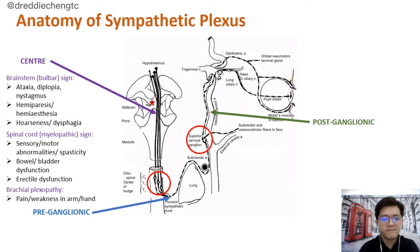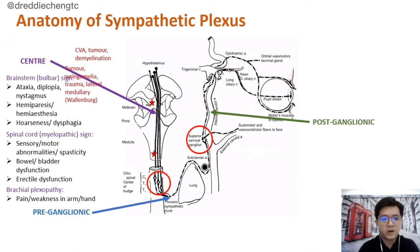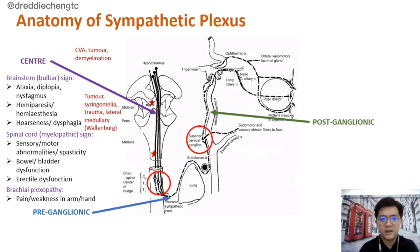If the lesion is over the brainstem, it can be either due to a cerebrovascular accident, a tumor, or demyelination. A lesion in the spinal cord can be due to a tumor, syringomyelia, trauma, or lateral medullary syndrome, which we call Wallenberg Syndrome.